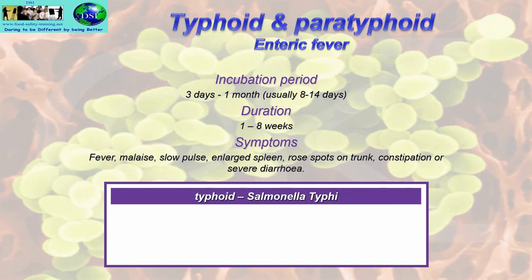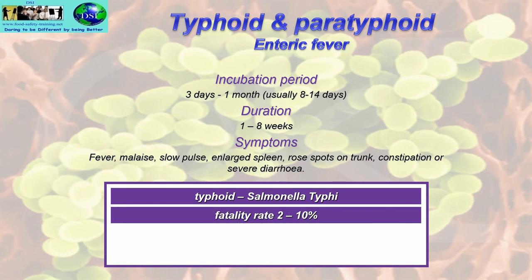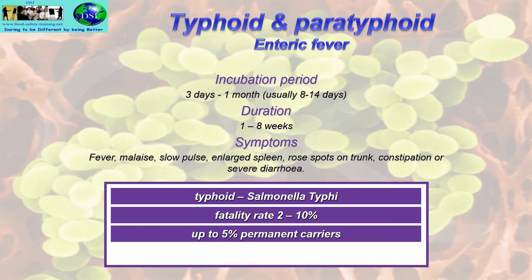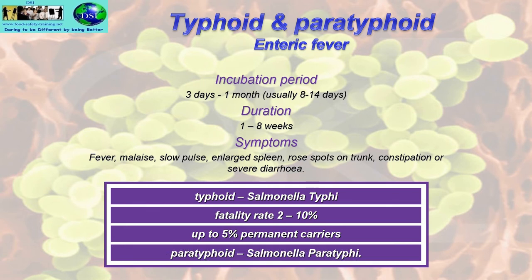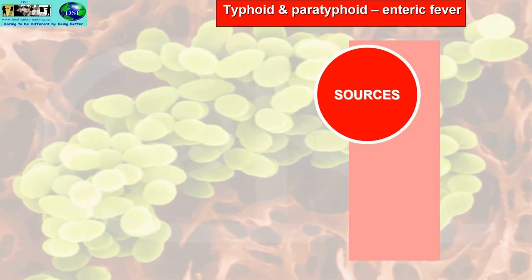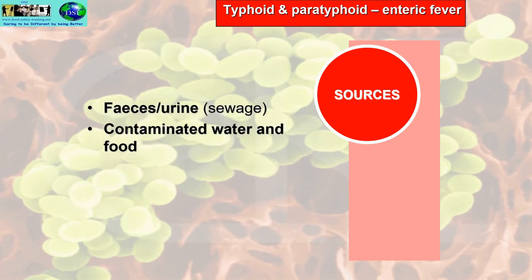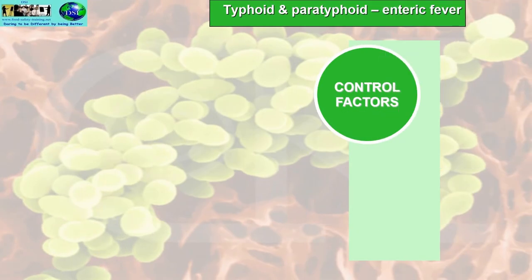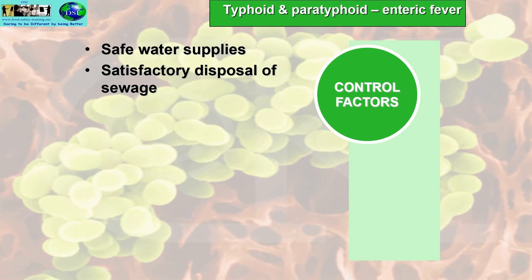Typhoid is caused by Salmonella typhi, with a fatality rate of 2–10%, and up to 5% become permanent carriers. Paratyphoid is caused by Salmonella paratyphi. Sources of enteric fever include faeces and urine, especially in sewage, and contaminated water and food. Control factors include safe water supplies and satisfactory disposal of sewage.